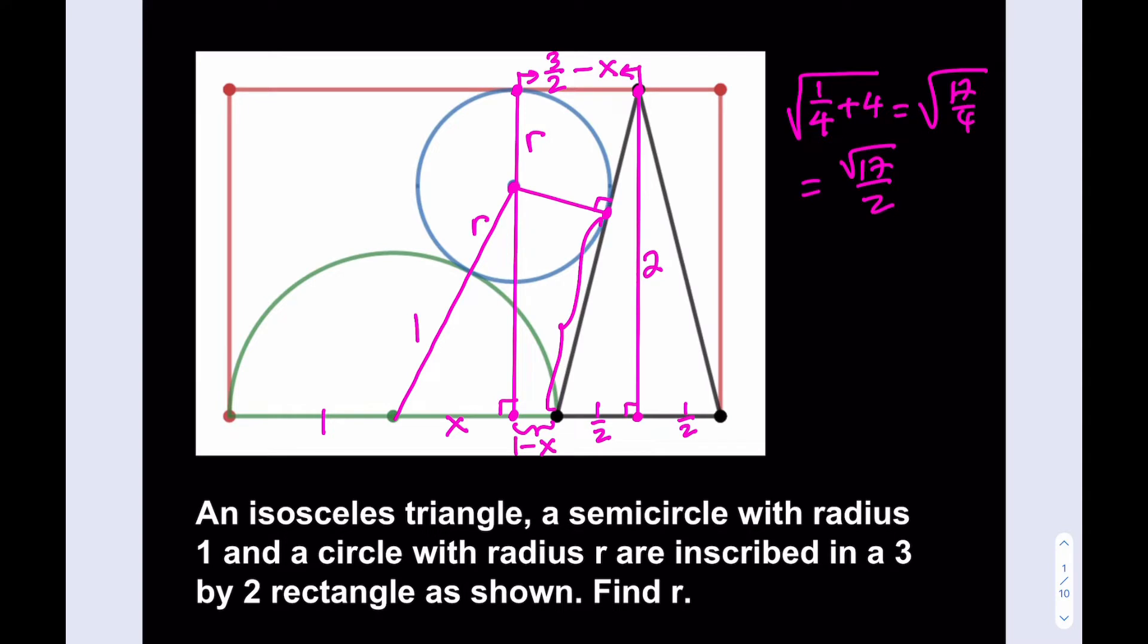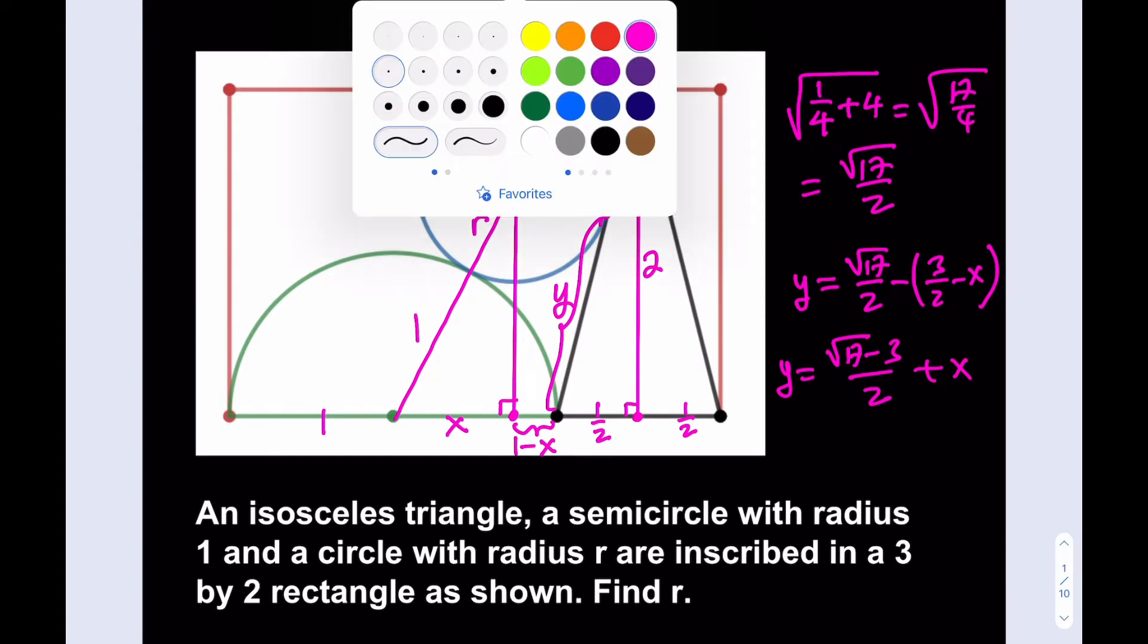So, it's kind of like this. 1 over 4, which is 1 half squared plus 2 squared, and the square root of that. That's going to be square root of 17 over 4, and that should be root 17 over 2. So, that's the whole thing. If I subtract 3 halves minus x from it, then I should be getting this piece. So, that piece there, let's call that y.